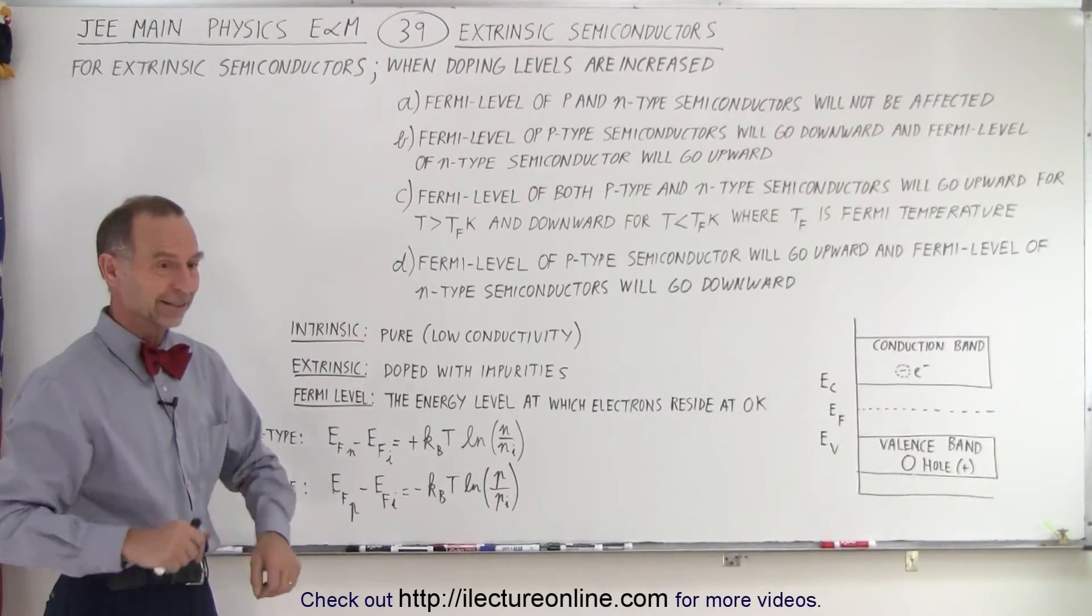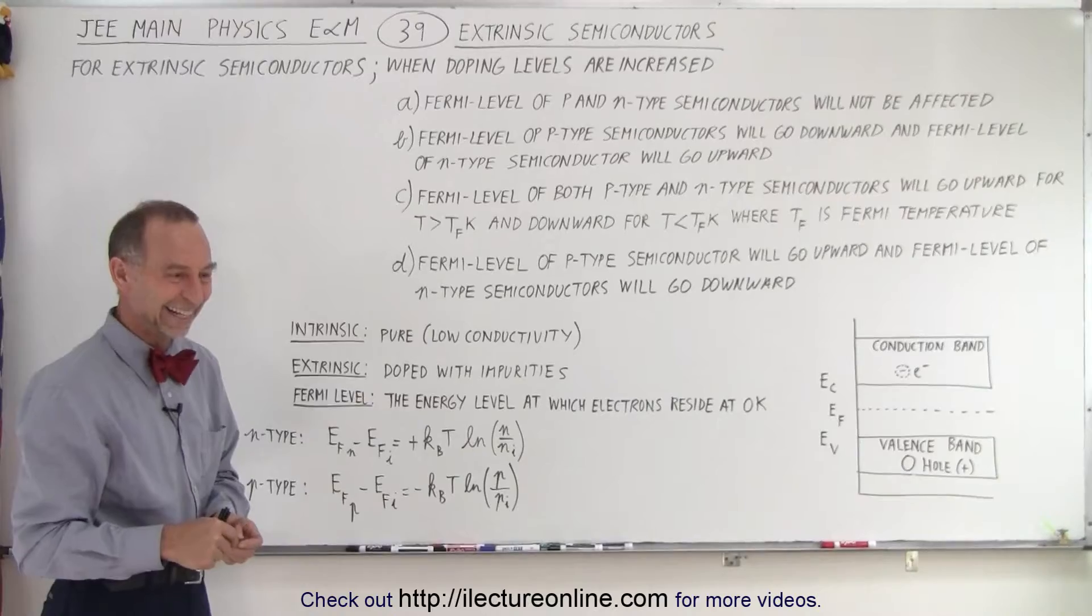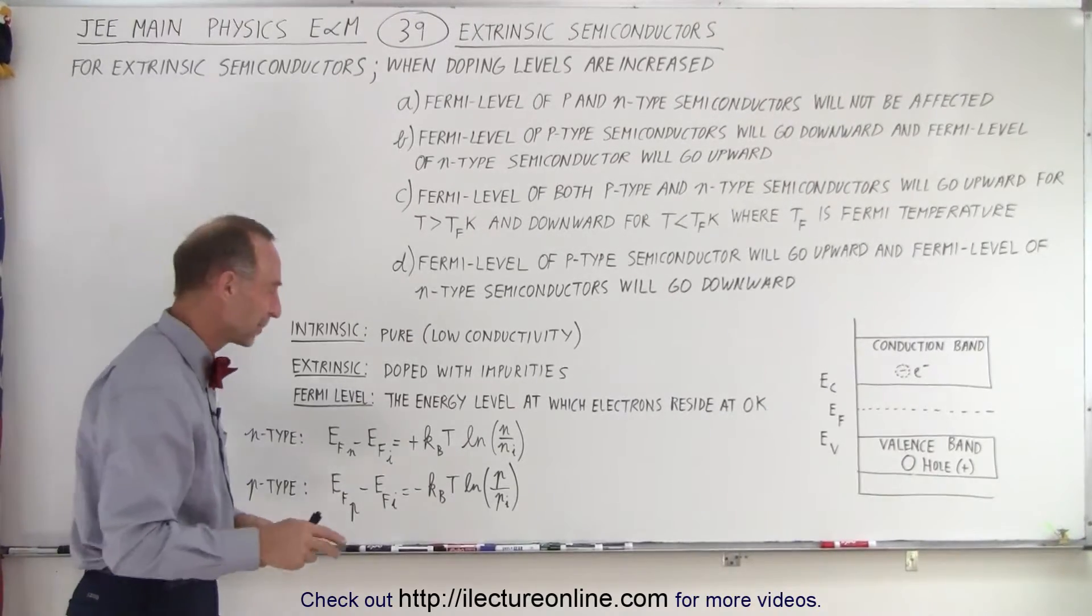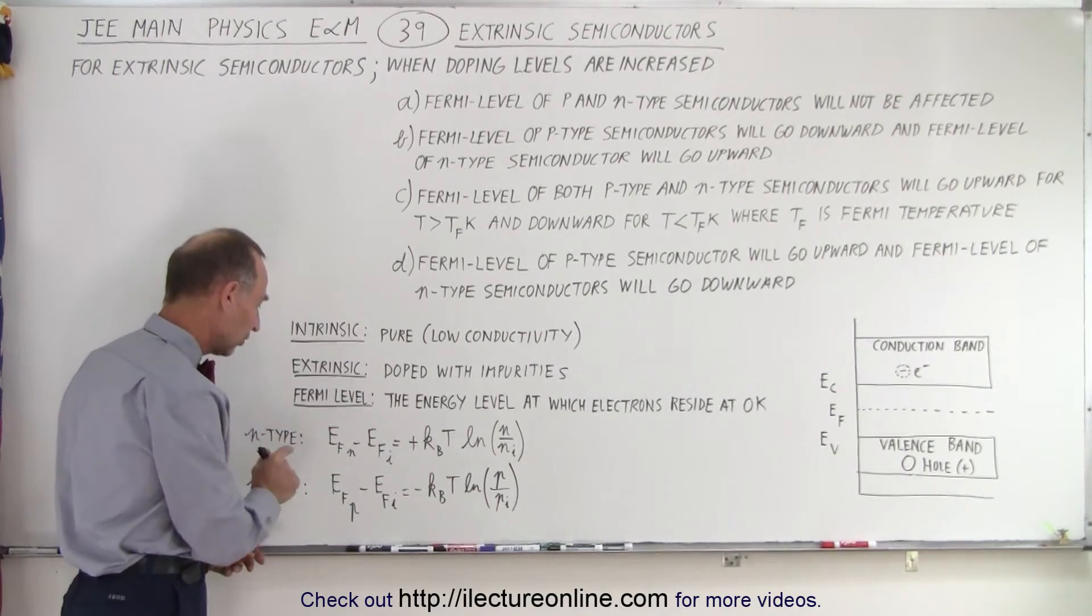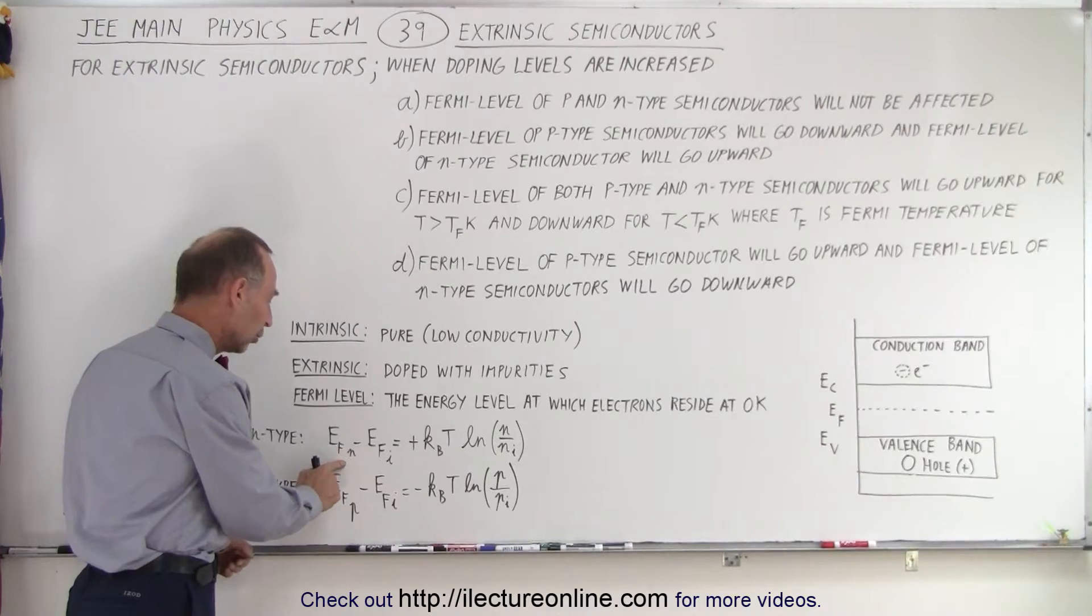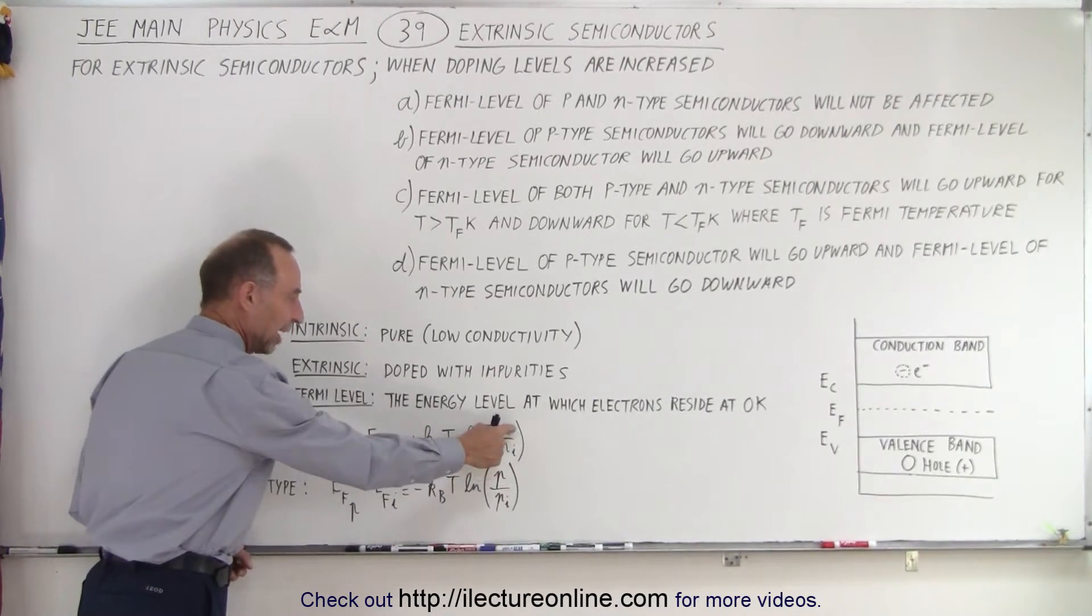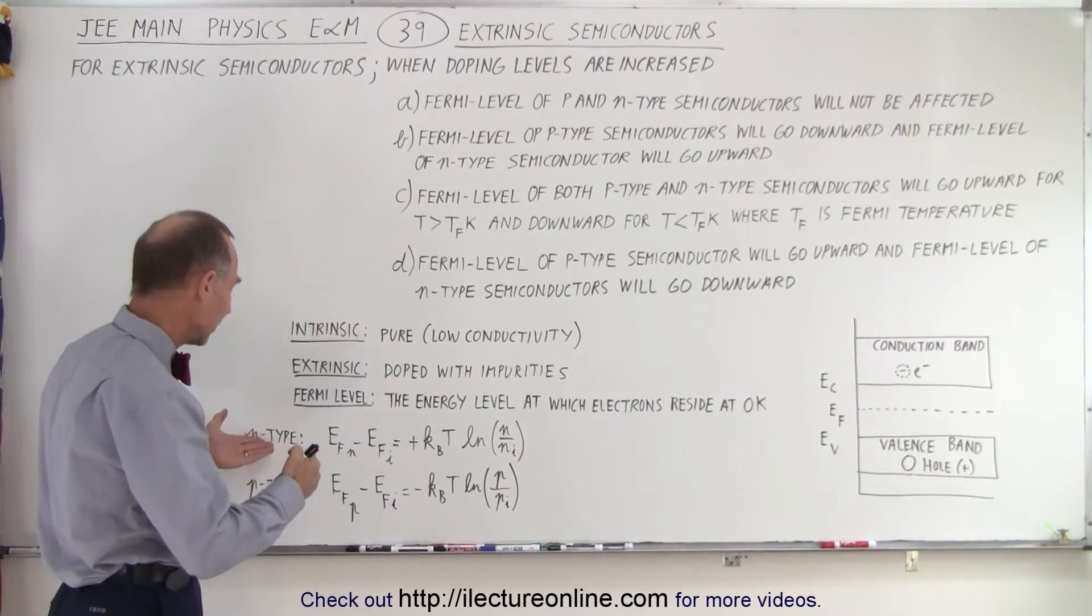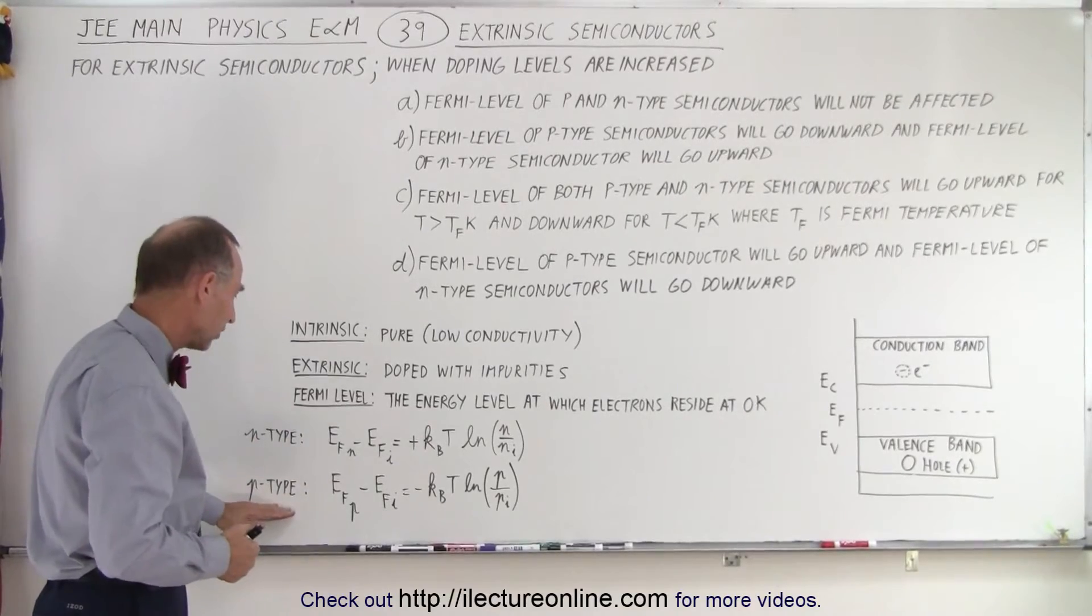So that means we have two dogs getting out of hand here. They're getting hungry. Alright, so we can see that for n-type semiconductors, the Fermi level goes up relative to the initial level because of the positive sign here, if n is bigger than the initial doping amount. So we can see that for n-type semiconductors, the Fermi level goes up. But for p-type semiconductors...